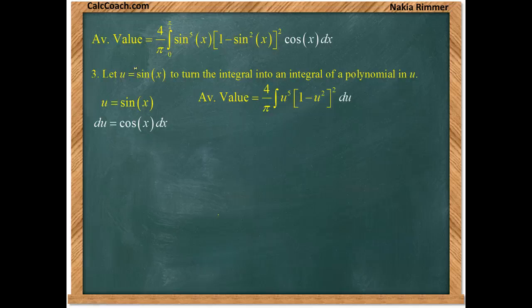This cosine to the fourth is cosine squared squared. We replace the cosine squared with one minus sine squared, and then we have to square that. But we're going to leave it as it is, not square it out yet.